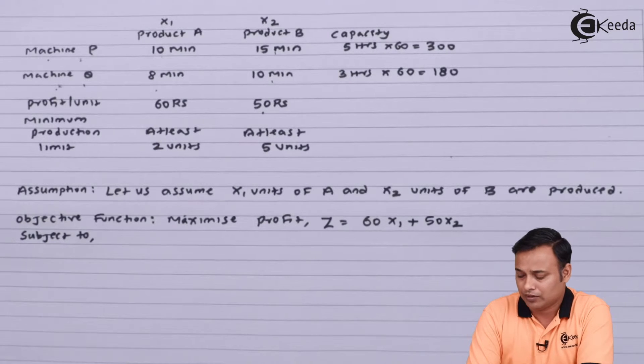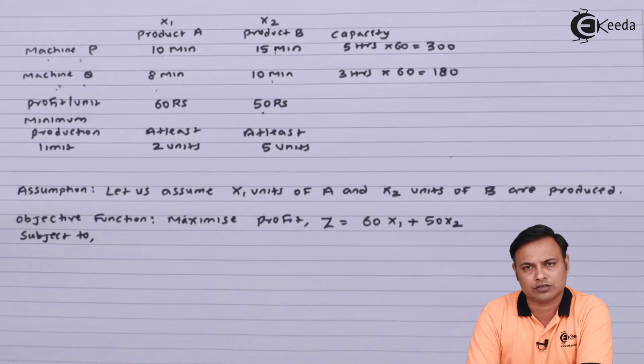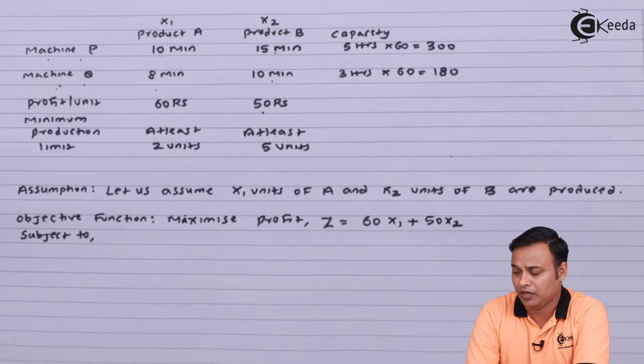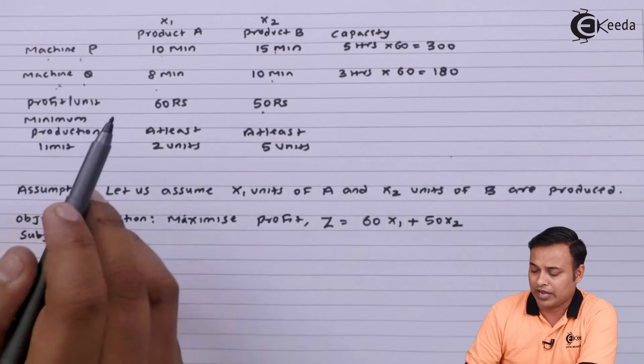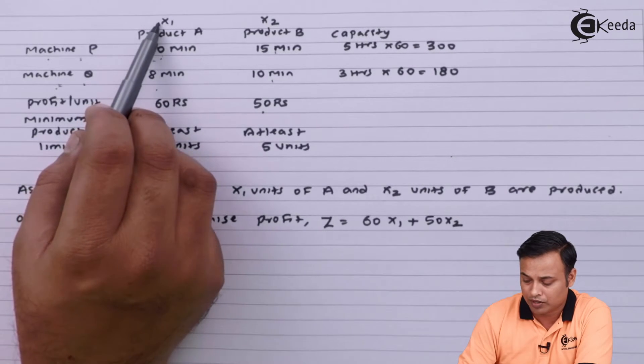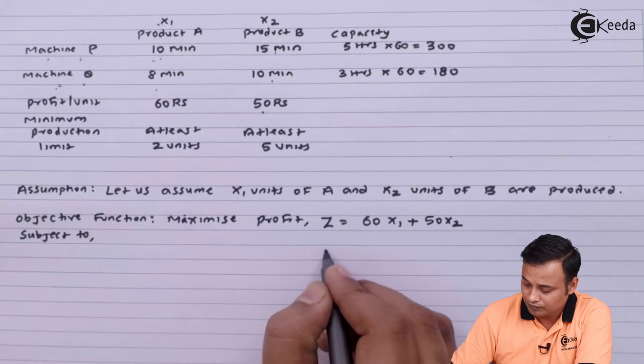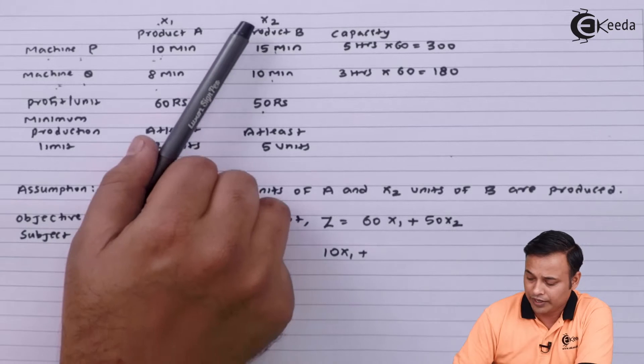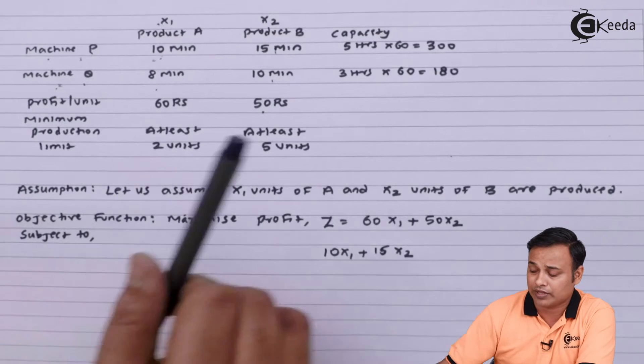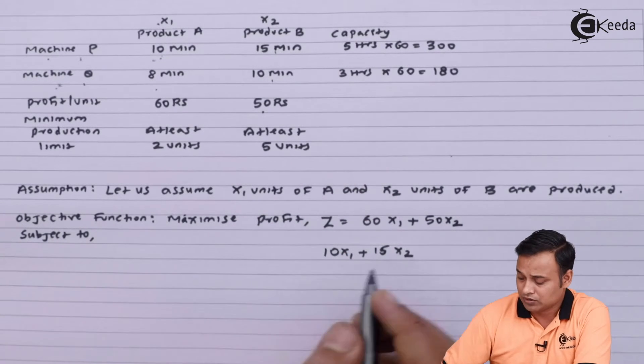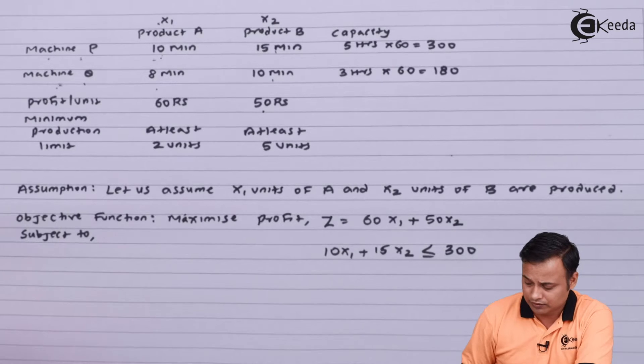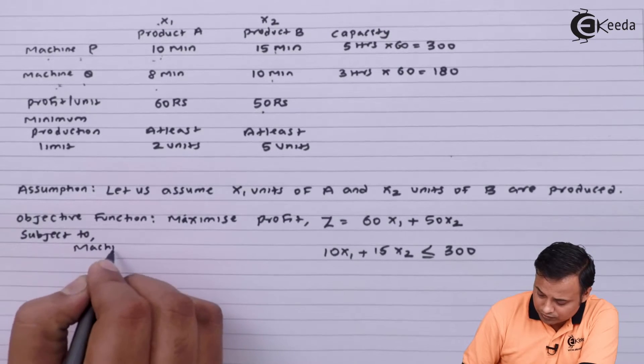What are my constraints? The time limit. I have a limited time limit of 300 minutes for machine P and 180 minutes for machine Q. So I need to work it out. See, the time per unit is 10 multiplied by number of units. Time per unit multiplied by number of units will be 10x1 plus 15x2. This is my total time consumed on machine P. This cannot be more than 300 minutes. That is the total supply available. So I will note down less than equal to 300.